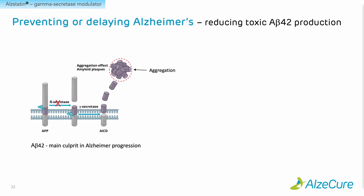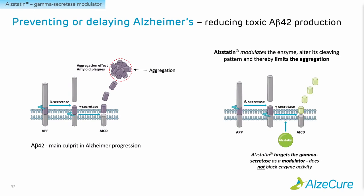The industry then went on to try to block beta secretase. Again, since beta secretase also has other important substrates, blocking enzyme activity completely was not a feasible way forward. The solution was to rather try to modulate specifically the cleavage of A-beta. These are the gamma secretase modulators — compounds that do not block enzyme activity, but rather specifically change how the gamma secretase cleaves out the A-beta peptides so that shorter fragments are formed instead of the longer toxic forms, which is important from a safety perspective.